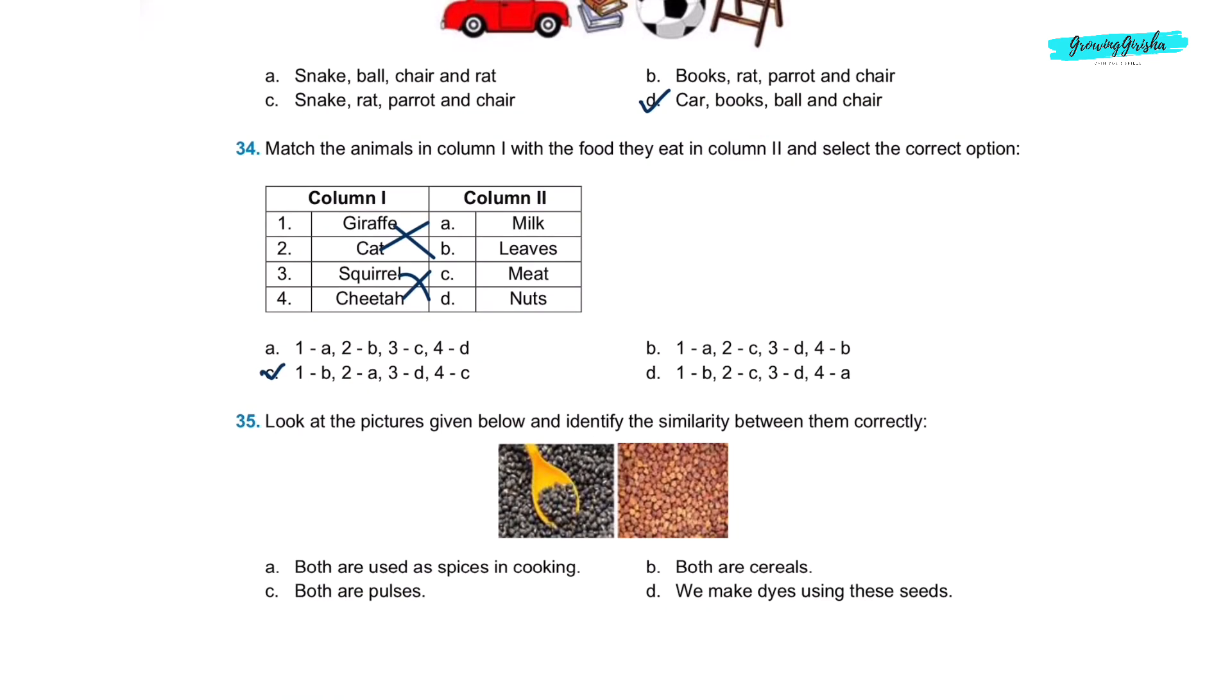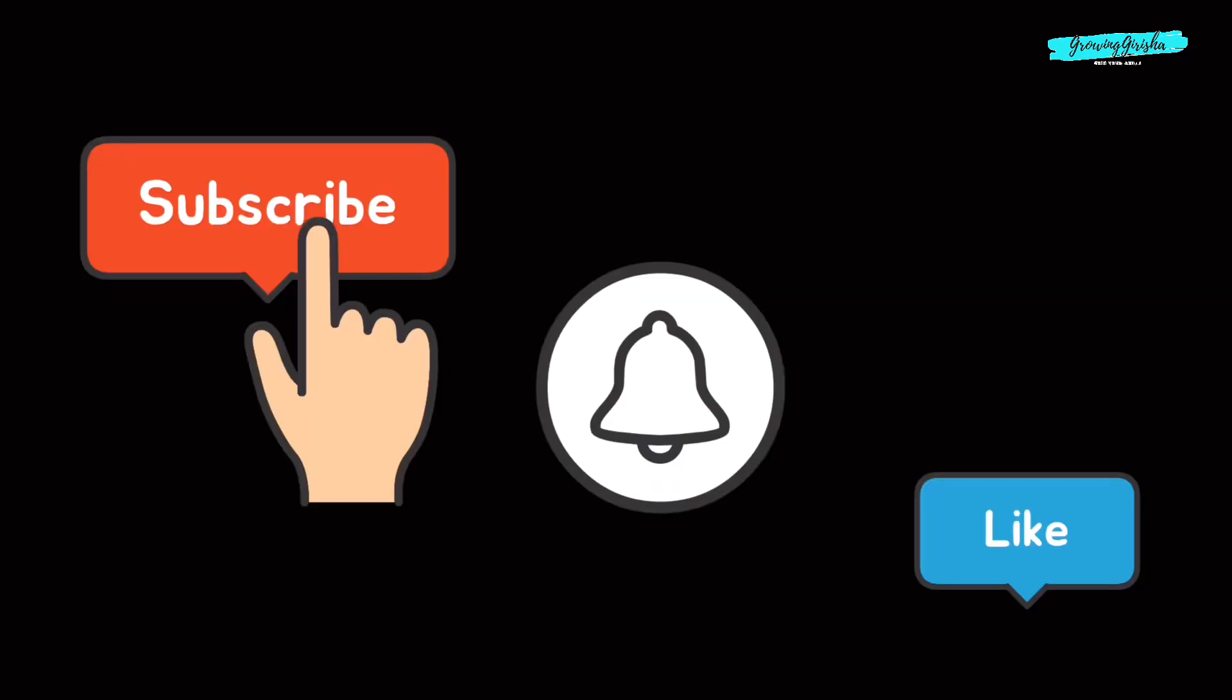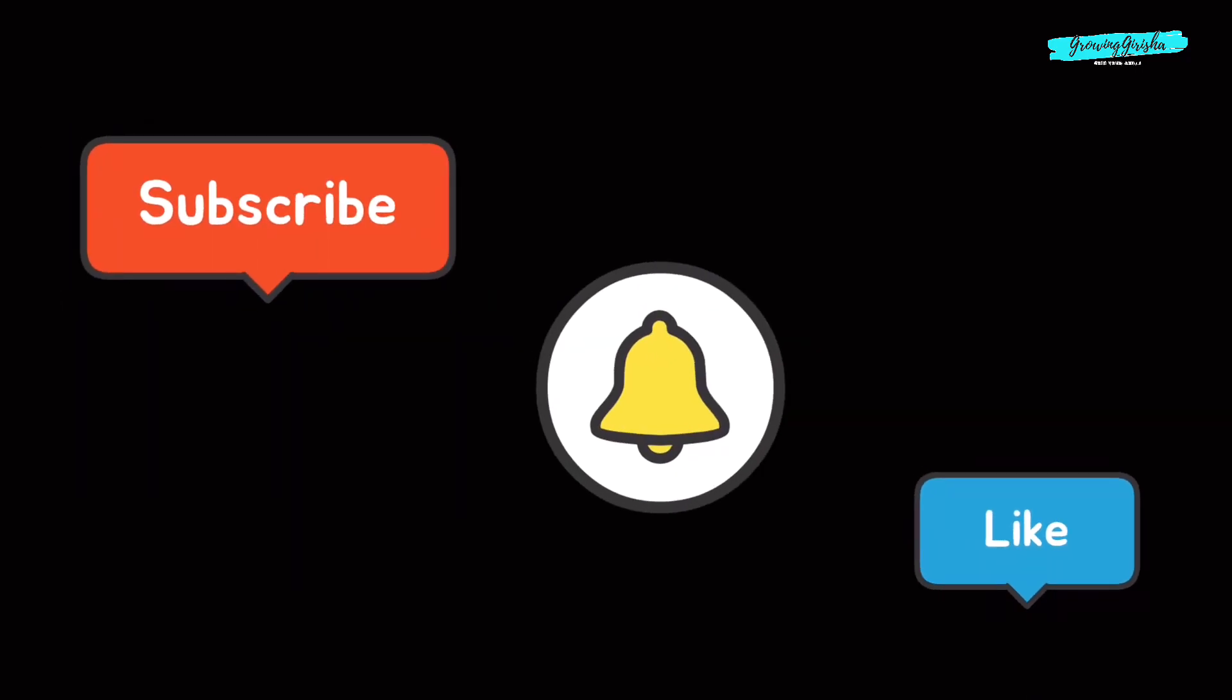Question 35. Look at the pictures given below and identify the similarity between them correctly. Option C, both are pulses. Thank you for watching. Like, comment, subscribe. See you in another video. Bye-bye.